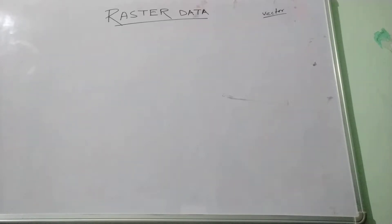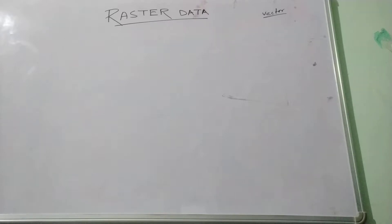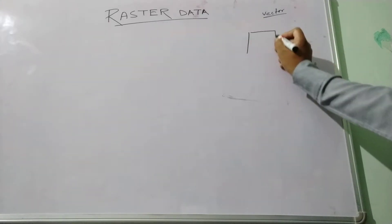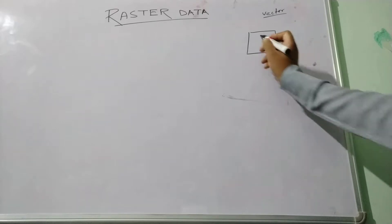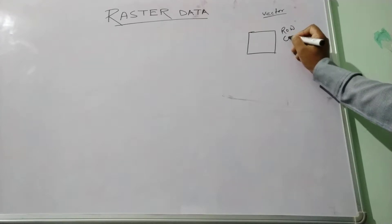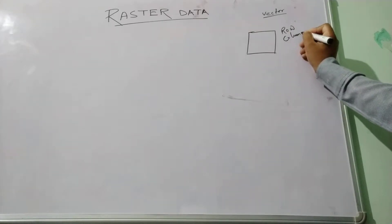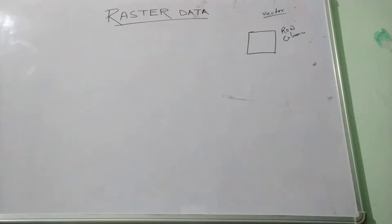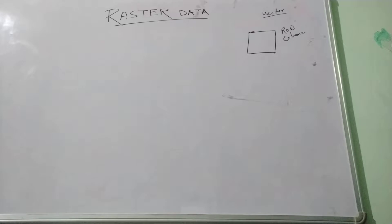Raster data format uses grid cells — there is a grid consisting of rows and columns to represent the earth surface features. Each and every cell in the raster conveys a single value which signifies the appearance of the spatial phenomena through this grid cell.